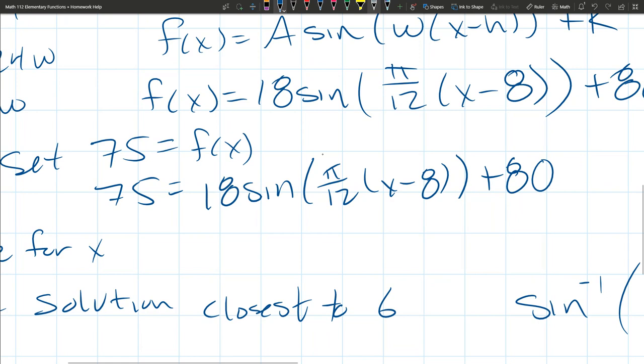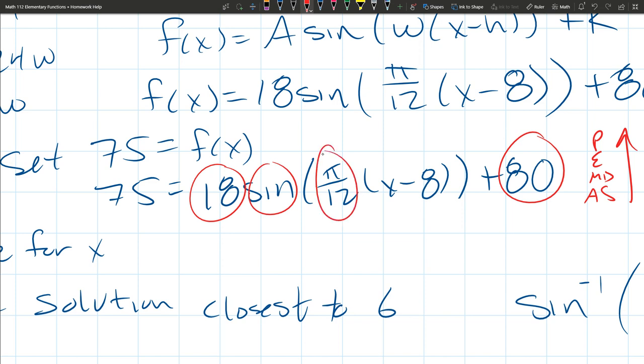But just going over the very basics, you've got to get rid of all x's friends. So I'll just go from first to last. So first thing I take out, you go PEMDAS. When in doubt, you're going up the PEMDAS ladder. So 80 goes first. That's addition and subtraction. Then 18, you're going to divide by 18. Then sine is next. Then multiply by 12 over π. Then subtract 8 or add 8. So that's the order you're going to go through and solve it. Good luck.